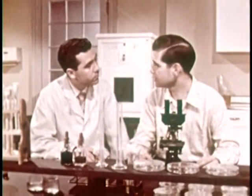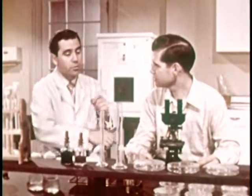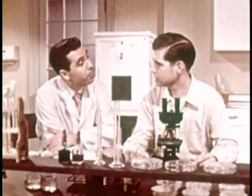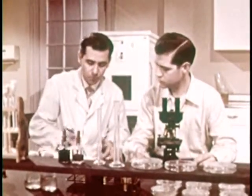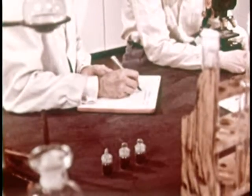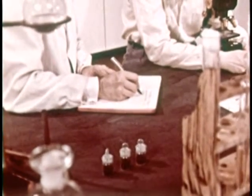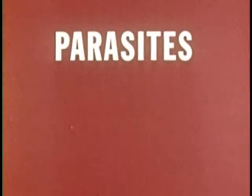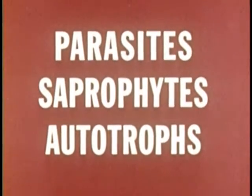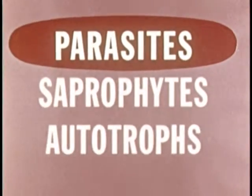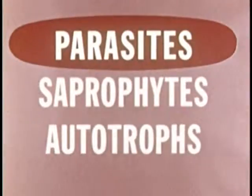He wonders how a beginner can ever learn about so many kinds of bacteria. Frank explains that it takes a systematic approach. For example, bacteria may be separated into groups according to what they live upon — the nature of the food they require. Some bacteria are parasites, others saprophytes, and still others autotrophs. Parasites depend upon living plants or animals for food. Here are some parasitic bacteria. Most bacteria that cause human disease are parasitic.